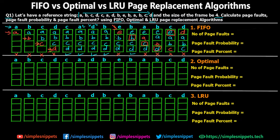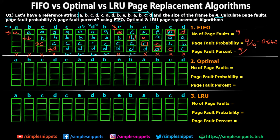That was the entire numerical using FIFO. Counting the page faults — 1, 2, 3, 4, 5, 6, 7, 8, 9 — page faults = 9. Page fault probability is number of page faults divided by total number of iterations: 9 / 14 = 0.642. Page fault percentage is 9 / 14 × 100 = 64.2%.